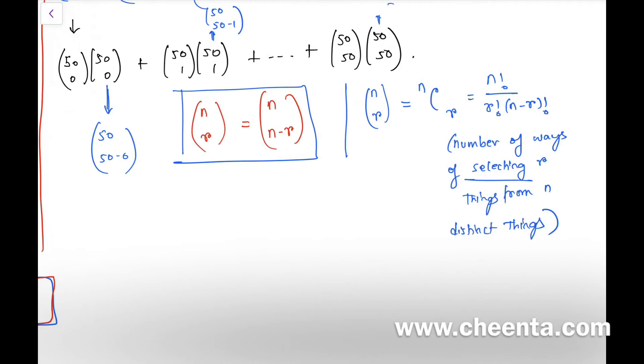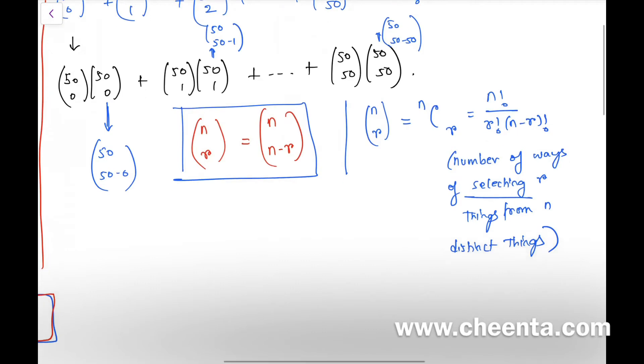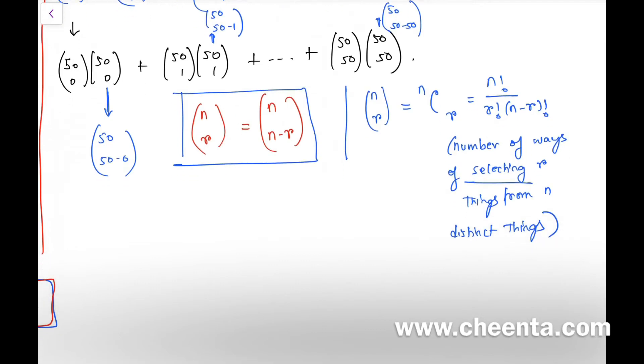Now there is a certain benefit of writing this—of making this transformation. So we will have (50 choose 0) × (50 choose 50), so we have converted it into (50 choose 50). The next one is (50 choose 1) × (50 choose 49).